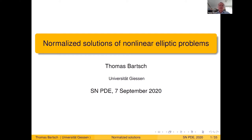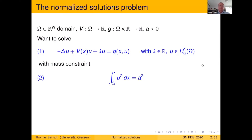The topic is normalized solutions of nonlinear elliptic problems — equations and systems. We start with a given domain Omega in R^N, which may be a bounded domain or all of R^N. We have a potential function V from Omega into R, a nonlinearity G from Omega times R to R, and a positive number A. We would like to solve the classical semilinear elliptic PDE: minus Laplacian U plus V(x)U plus lambda U equals G(x,U). In addition, we require the L2 norm of U to equal A as a mass constraint.